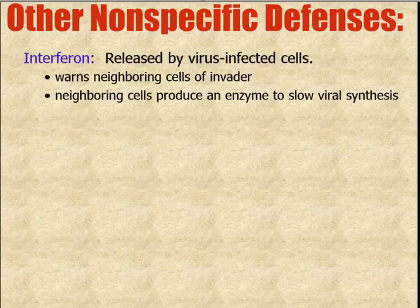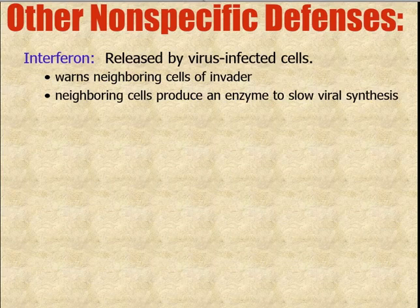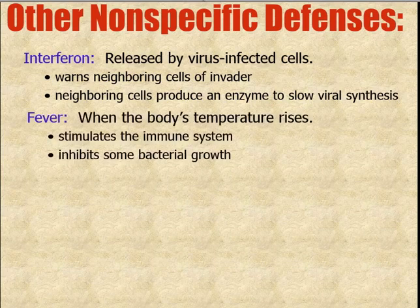These are other nonspecific defenses. The first is a chemical called interferon. Interferon is released by cells that have been infected by viruses; it warns neighboring cells of an invader and tells them to produce an enzyme that slows viral synthesis so viruses can't be produced as quickly. We don't always release interferon because it takes energy, so the body saves energy by turning that chemical on and off.